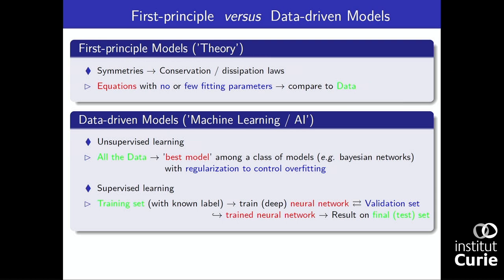Then you have the supervised model. You split your dataset into different parts. You take a first part called the training set with typically known labels. For instance, if you try to find cells in images, you need annotated images with a segmentation of cells. Then you train a neural network — which might be deep or not — to recognize the known labels. You need to validate this approach using a subset called the validation set, where in back and forth you can control for all the fitting. Once you've trained your network, you can apply it to the remaining test dataset.